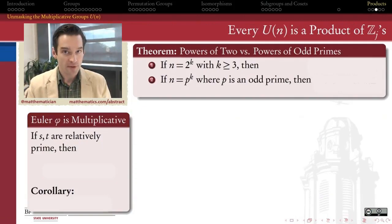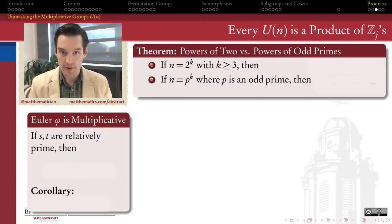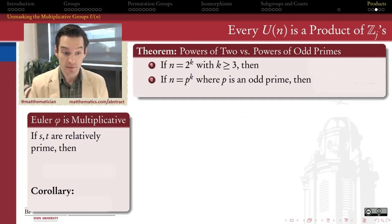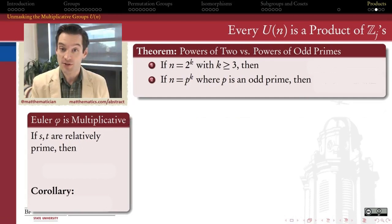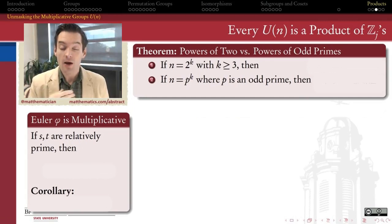A couple of the results we'll need in this video are taken from number theory. One of the key things that powers our classification of these multiplicative groups is the multiplicativity of the Euler phi function, the totient function, which counts how many natural numbers less than n are relatively prime to n.